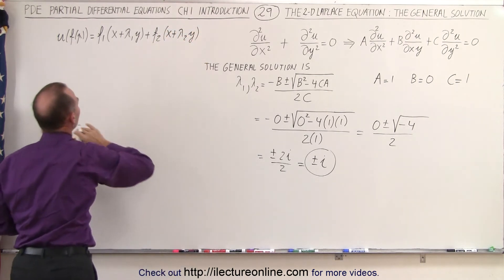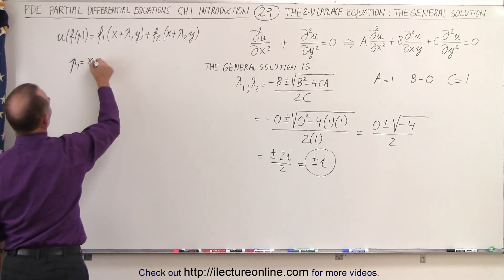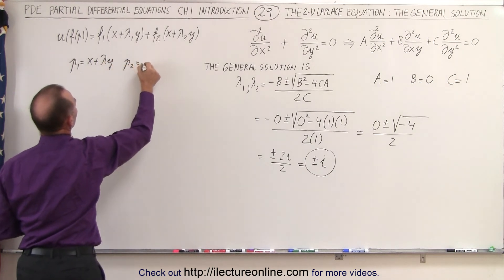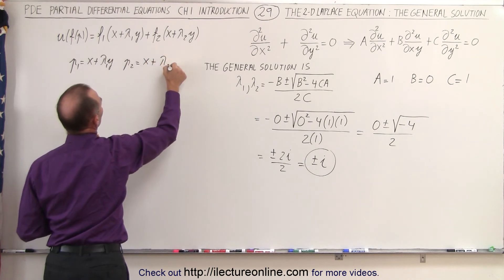And of course, these are the general function for p, so we can say that p1 is equal to x plus lambda y, and p2 is equal to x, that would be lambda 1, plus lambda 2 y.